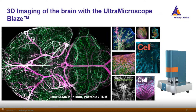Coming then to the UltraMicroscope Blaze—this is a light sheet microscope that will also be mentioned in Eben's talk. You can see here some examples of publications where it was used for analysis of the brain and also other tissues.